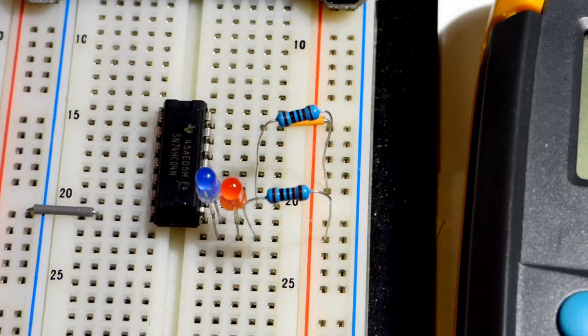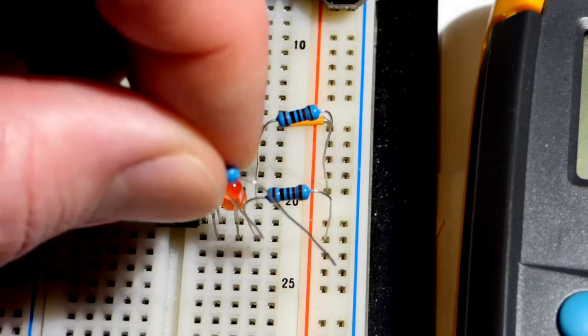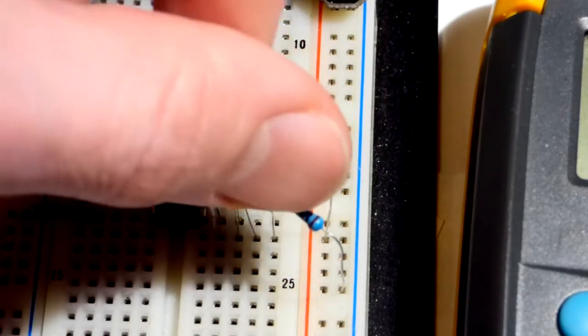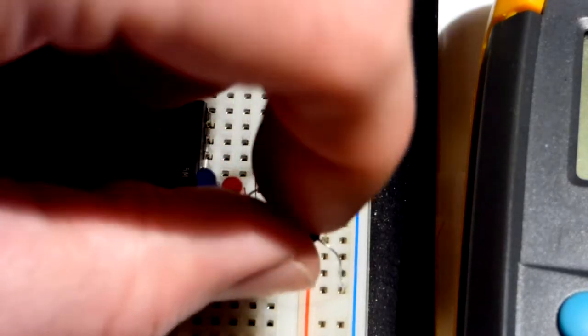Now, we need a path to the negative rail right there. So we have a polarity indicator circuit here.